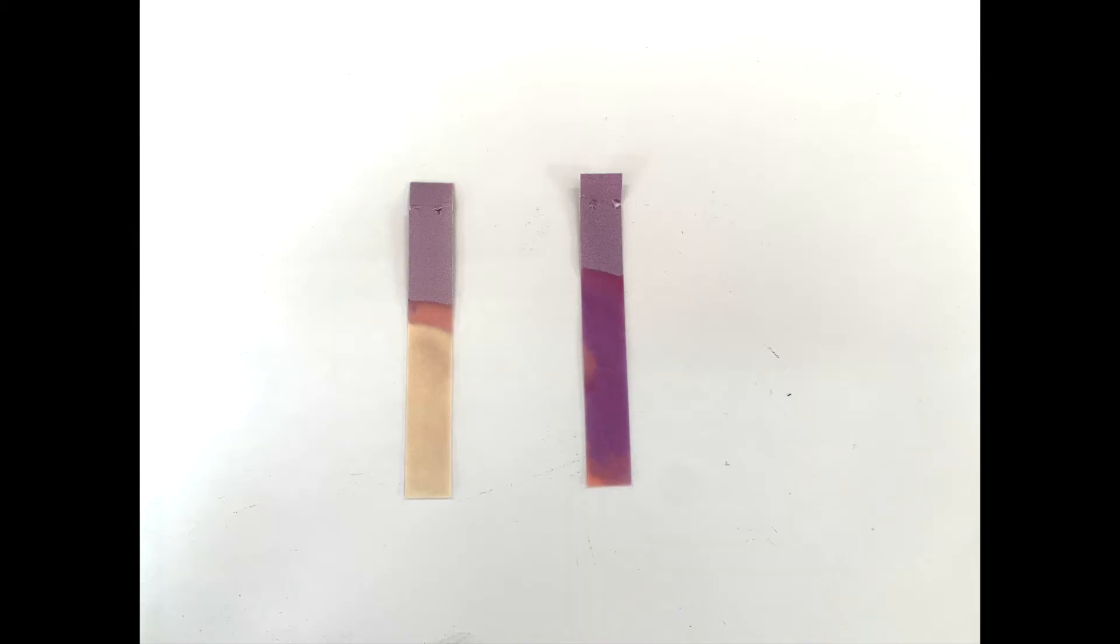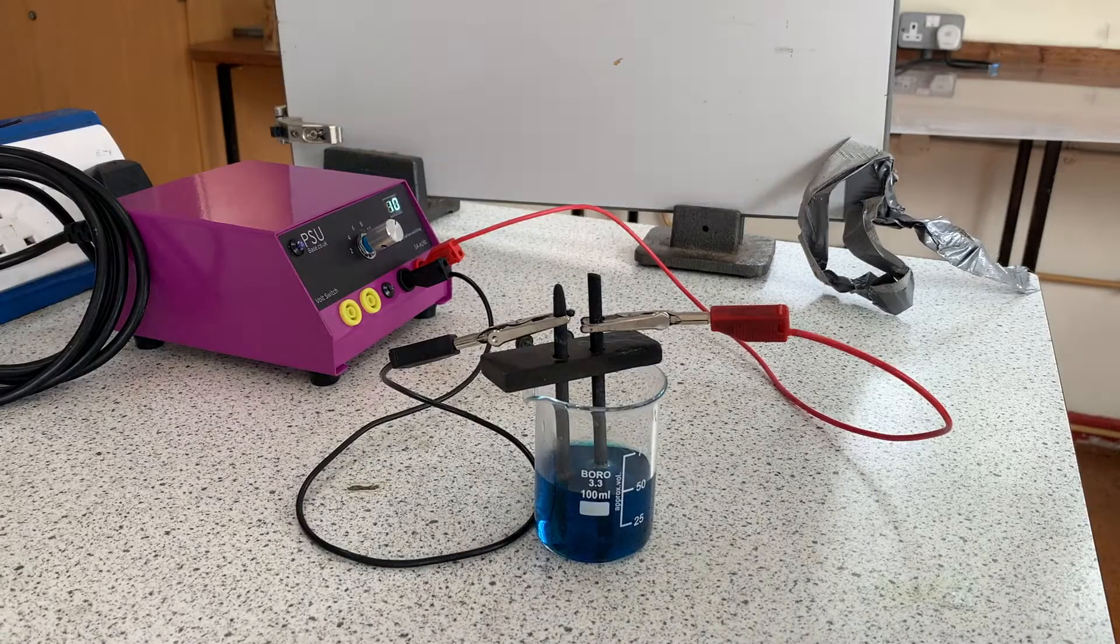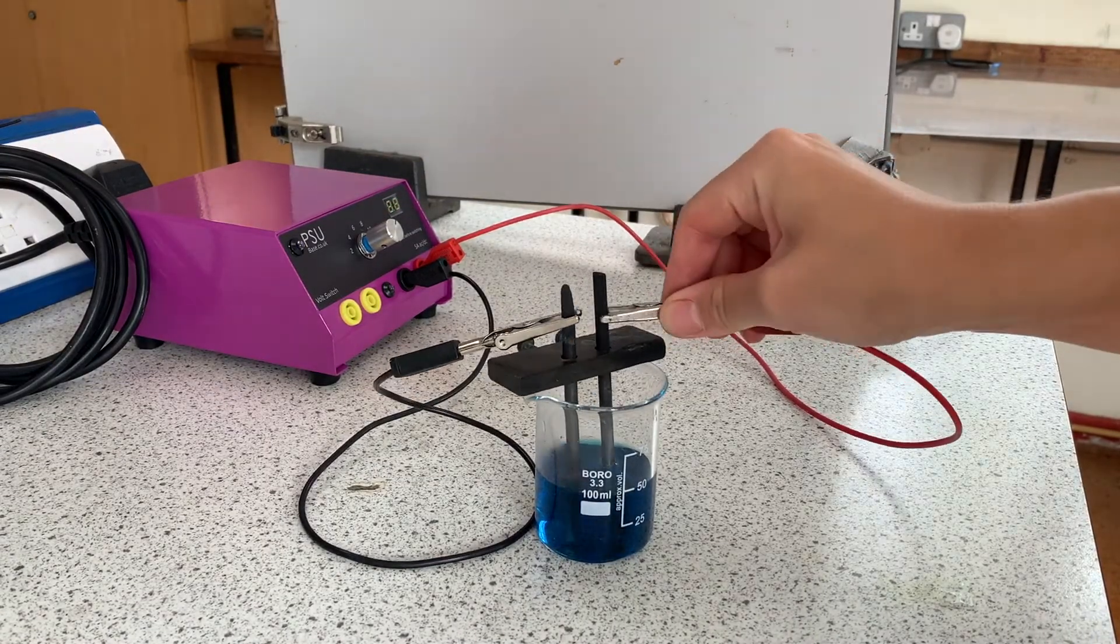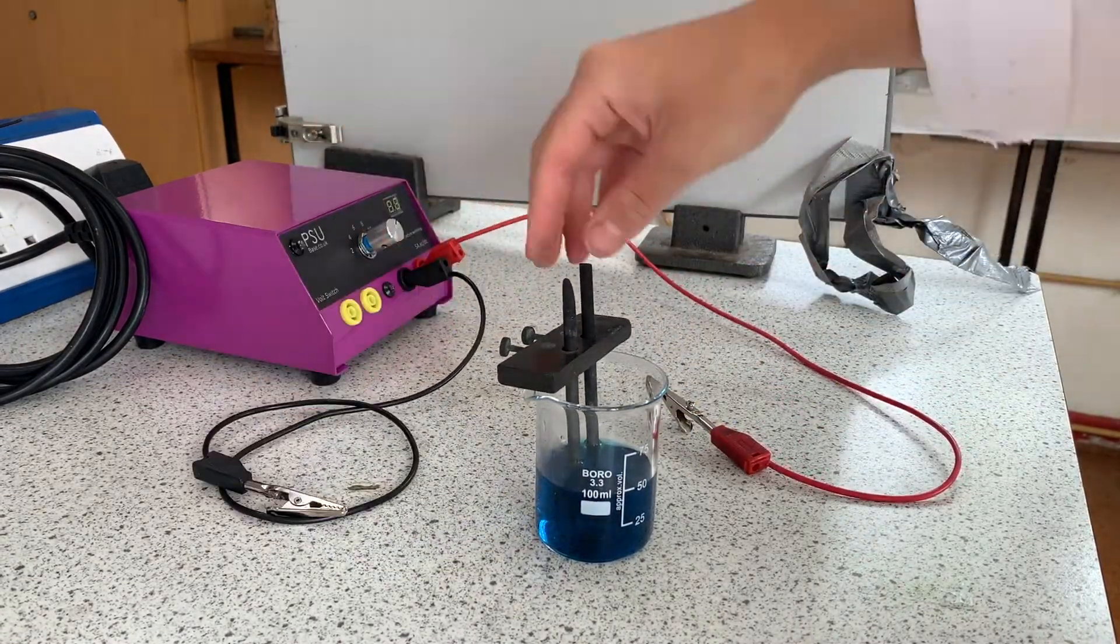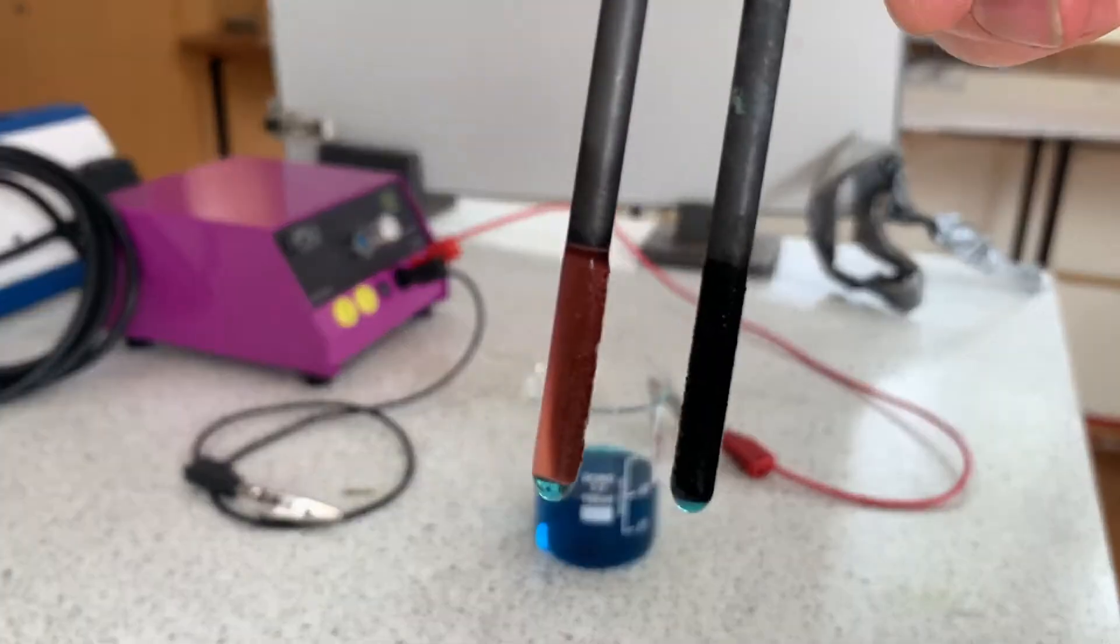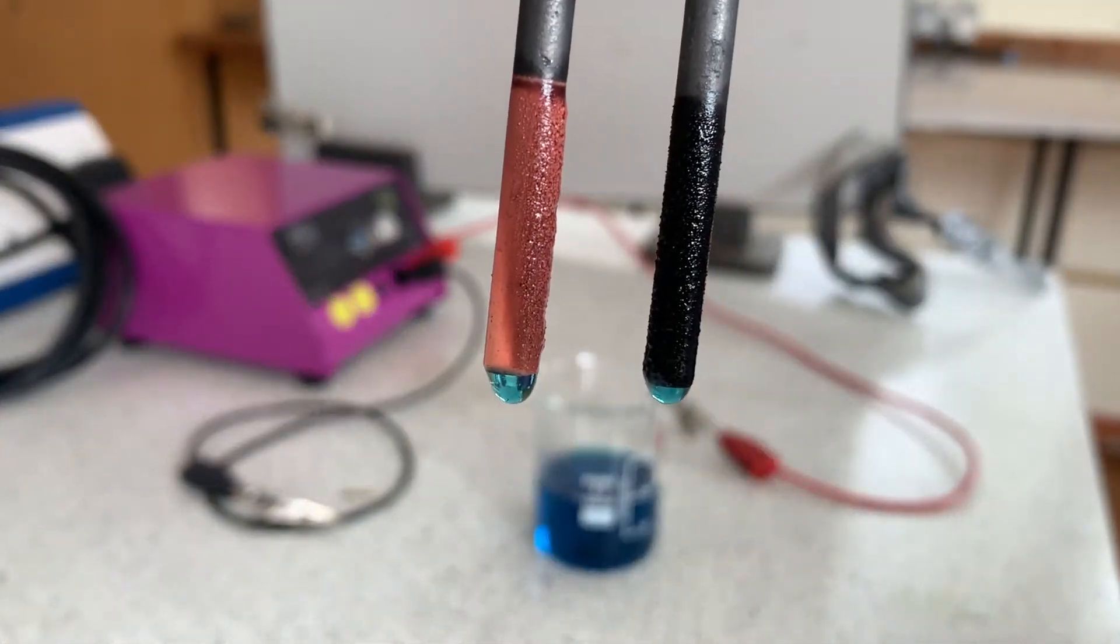On the left is the previous positive result for chlorine and on the right the litmus paper has not been bleached which means the gas given off this time is not chlorine. If we disconnect the power we can look at the negative electrode. Again we can see copper has been produced.